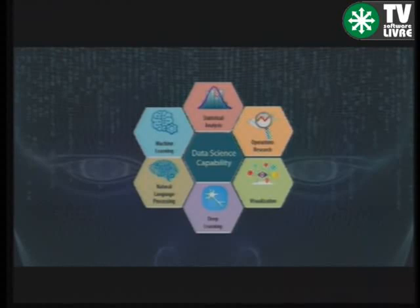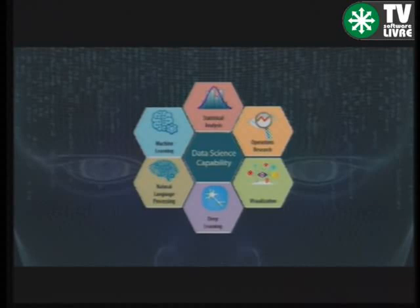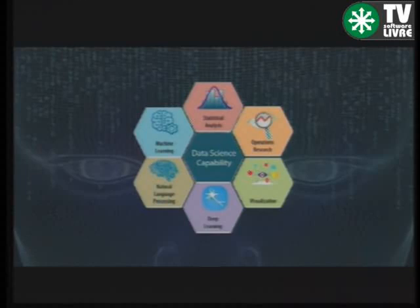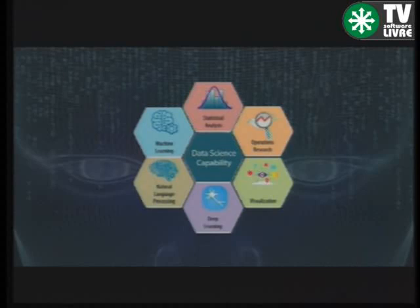Aqui a gente vê as seis principais áreas que compõem a ciência de dados: Machine Learning, NLP e Deep Learning, que são a parte computacional. Em NLP, a gente vê muito profissional de linguística entrando na história — o pessoal que até então não lidava com computação está agregando valor. Do outro lado, temos Data Visualization, em cima de gráficos e tudo mais. Temos análise estatística, mais para o lado da análise descritiva — algo que matemáticos e estatísticos vêm fazendo há muito tempo, hoje sendo reaproveitado para o Machine Learning e o Deep Learning.